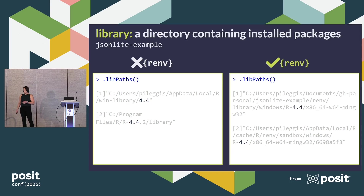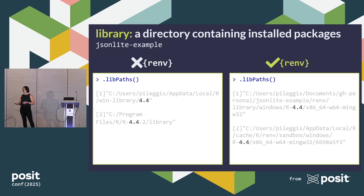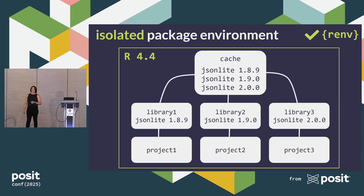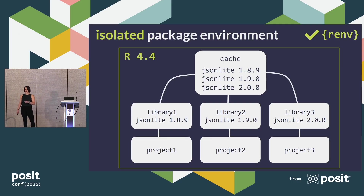When I do have RNV activated, I again have two library paths associated with R version 4.4. Additionally, one is project-specific for my JSON Lite example and the other points to my global cache. So with RNV activated, I have an isolated package environment: a global cache containing every version of JSON Lite I could possibly want, and all of my projects can be associated with a different version of JSON Lite.